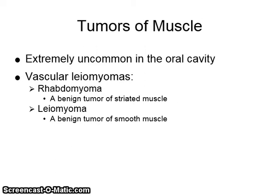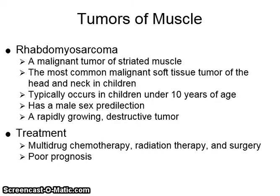Tumors of the muscle are extremely uncommon in the oral cavity, including vascular leiomyomas, rhabdomyoma, and leiomyoma. Rhabdomyoma is a benign tumor of striated muscle; leiomyoma is a benign tumor of smooth muscle. Rhabdomyosarcoma is the most common malignant soft tissue tumor of the head and neck in children. It typically occurs in children under 10 years of age, has a male sex predilection, and is a rapidly growing destructive tumor. It is usually treated with multi-drug chemotherapy, radiation, and surgery, and has a very poor prognosis.